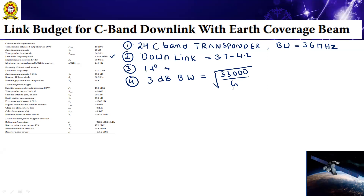Since antenna beam width and gain are linked by this equation, the on-axis gain of the global beam antenna is used. When substituting this gain in our example, the link budget calculation is for an earth station at the edge of the coverage zone, where the effective gain of the antenna is 3dB lower. So we have a 17dB version — 3dB down — automatically found in our antenna beam width.